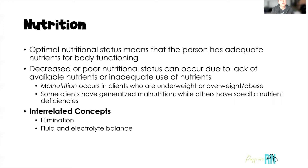While some clients have generalized malnutrition, others have a specific nutrient deficiency — such as iron deficiency anemia, or bone demineralization due to a lack of calcium and vitamin D in their diet. When we think about this core concept, there are some interrelated concepts: one we've already discussed in this series is fluid and electrolyte balance, and later we will talk about another interrelated concept, which is elimination.